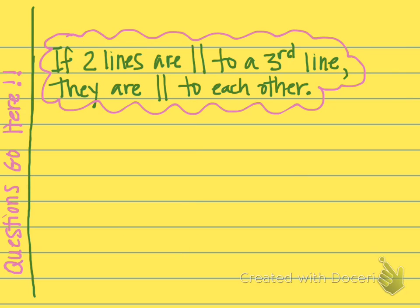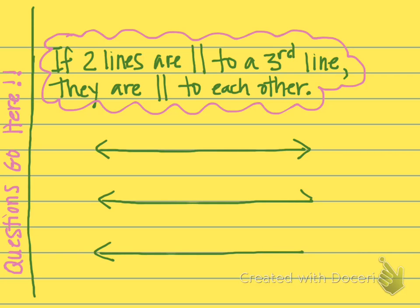The last theorem says if two lines are both parallel to a third line, then they are all parallel to each other. So if we've got two lines and they are each parallel to a third line, then all three lines are parallel to each other.